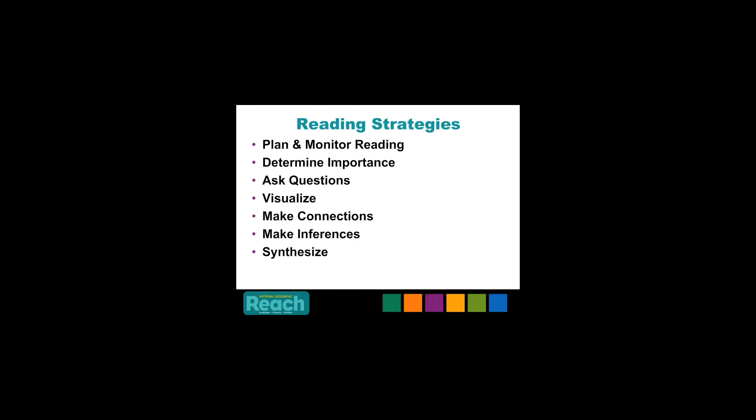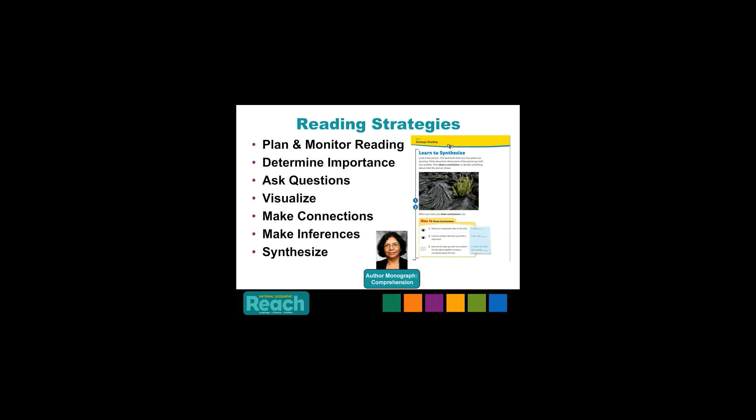Now let's talk about comprehension. Reach focuses on seven reading strategies to promote comprehension: plan and monitor reading, determine importance, ask questions, visualize, make connections, make inferences, and synthesize. Each unit will focus on one of these reading strategies. Reach prepares your English language learners for success as a reader with many opportunities to understand a variety of literary texts. With each reading strategy, we provide explicit models and support — great how-to's that model how to draw conclusions. We will go into more details with reading strategy instruction in the on-demand modules. To learn more, pause this session and read Sylvia Thompson's author monograph, Build Strategic Thinking.